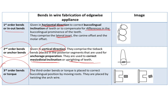The third order bend is also known as the torque bend. It is given to express torque and bring about correction in the root position of the tooth. This is done by placing a twist in the wire. So whereas first order bends are in the horizontal direction and second order bends are in the vertical direction, torque bends are brought about by twisting the wire, so that when the wire is engaged into the bracket, the bracket also experiences that twisting motion, bringing about correction of tooth torque.